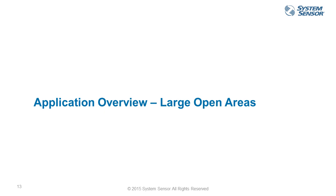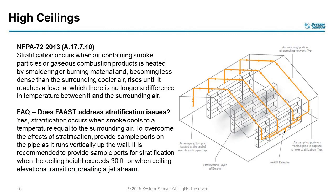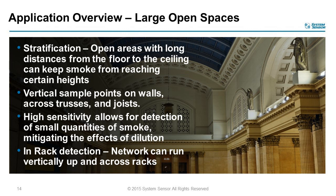The next application highlight is large open areas — another great application for air sampling detection. This includes high ceilings, atriums, server racks, and warehouses where you may need to provide multiple levels of detection. Air sampling also addresses stratification concerns, where you can have piping on the side walls with sample ports on riser pieces to address any stratification. High sensitivity allows detection of small quantities of smoke even when smoke isn't fully reaching ceiling-level ports.